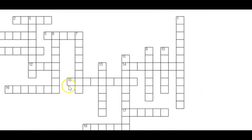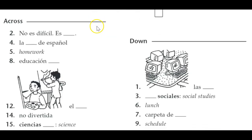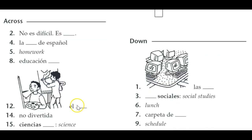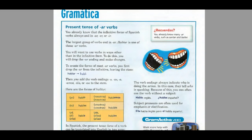Here you have your review crossword, which is good review for the vocabulary — no es difícil, es fácil. Two across and so on. And then your organizer, of course, to end this chapter. That'll end the video for now for part two, and we will do part three next time. Gracias.